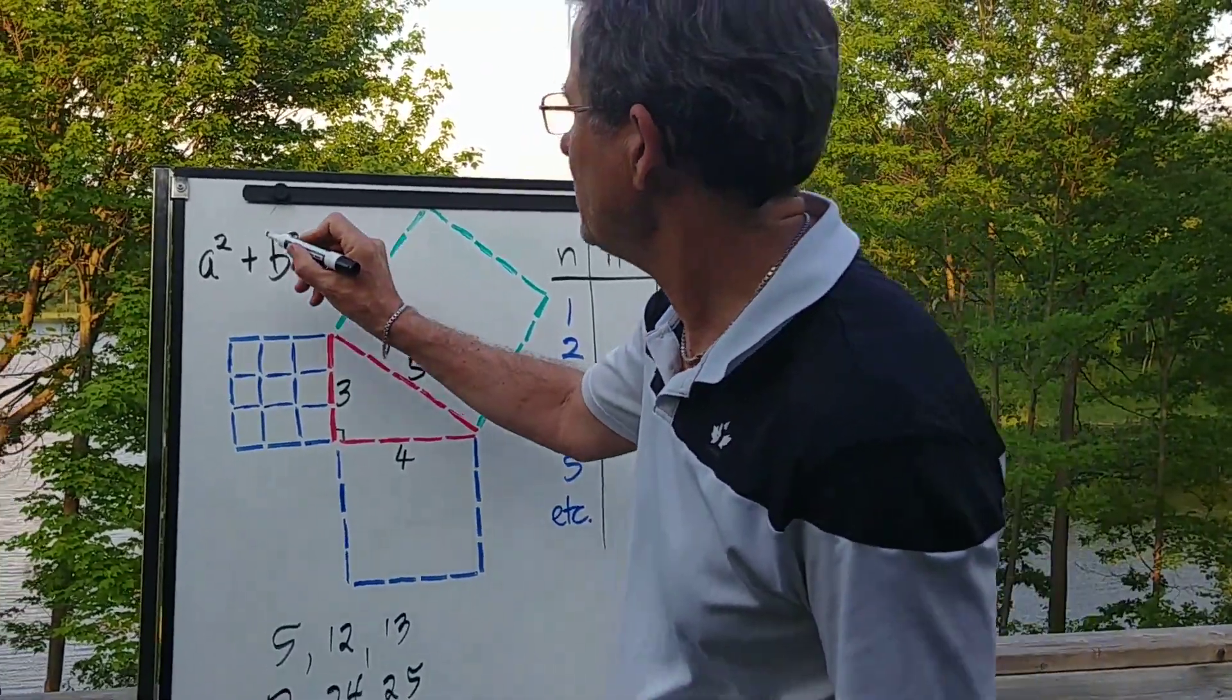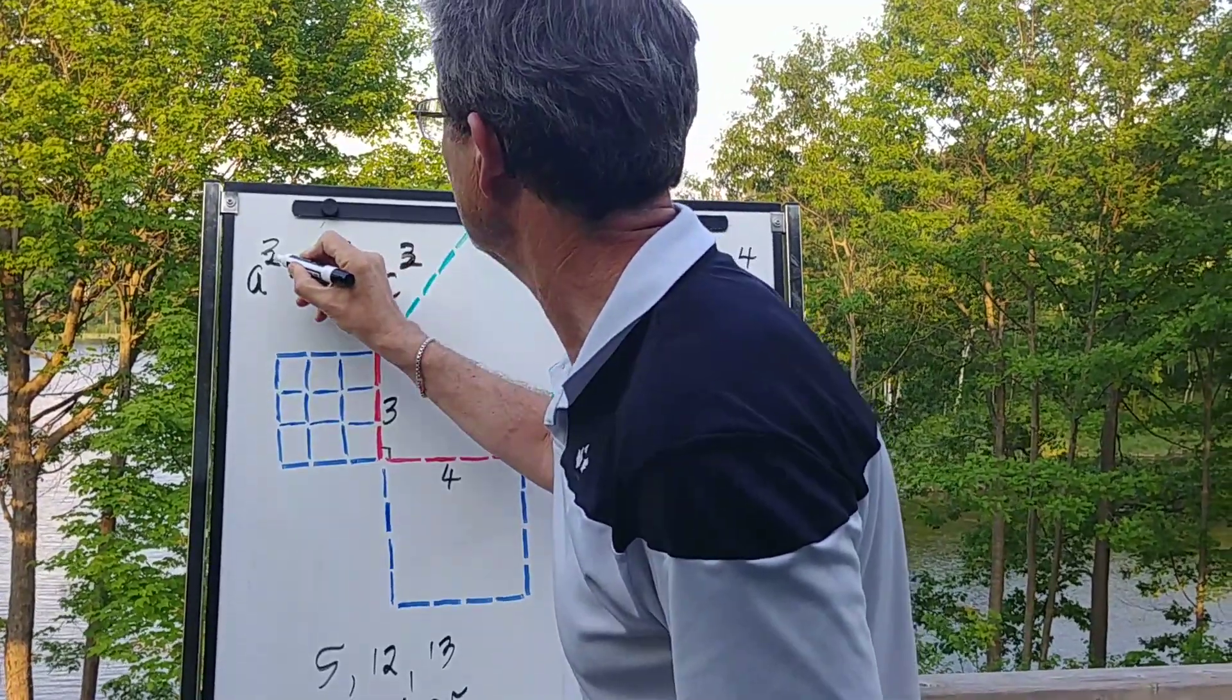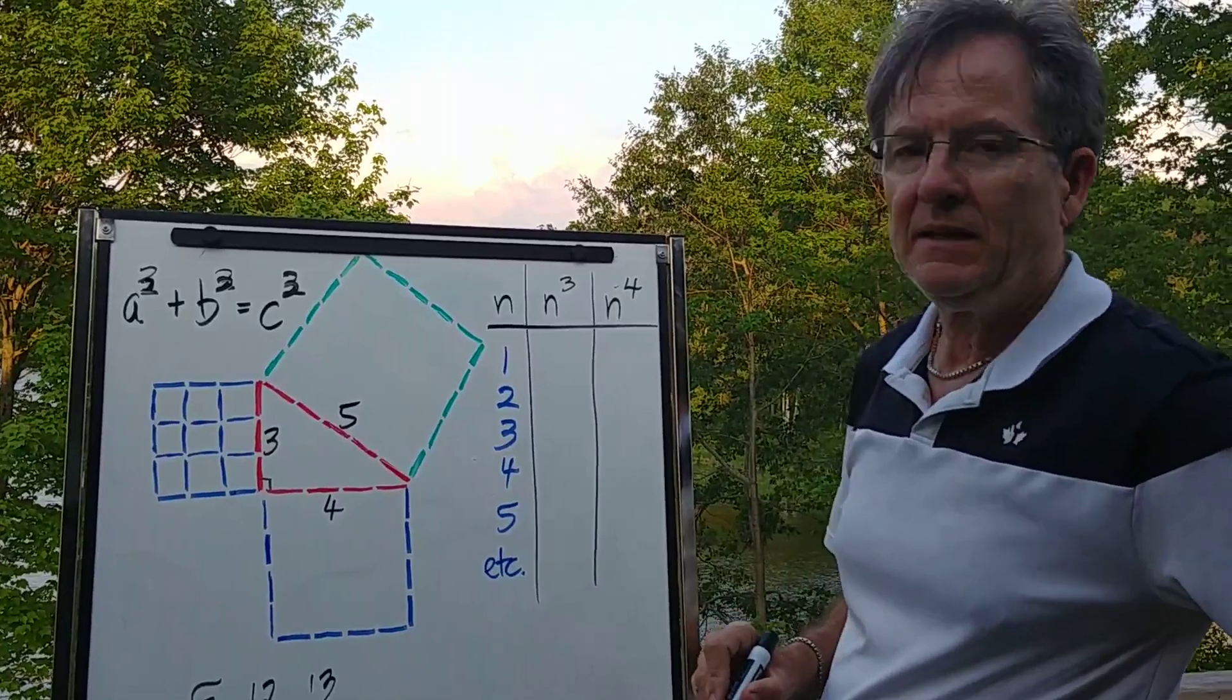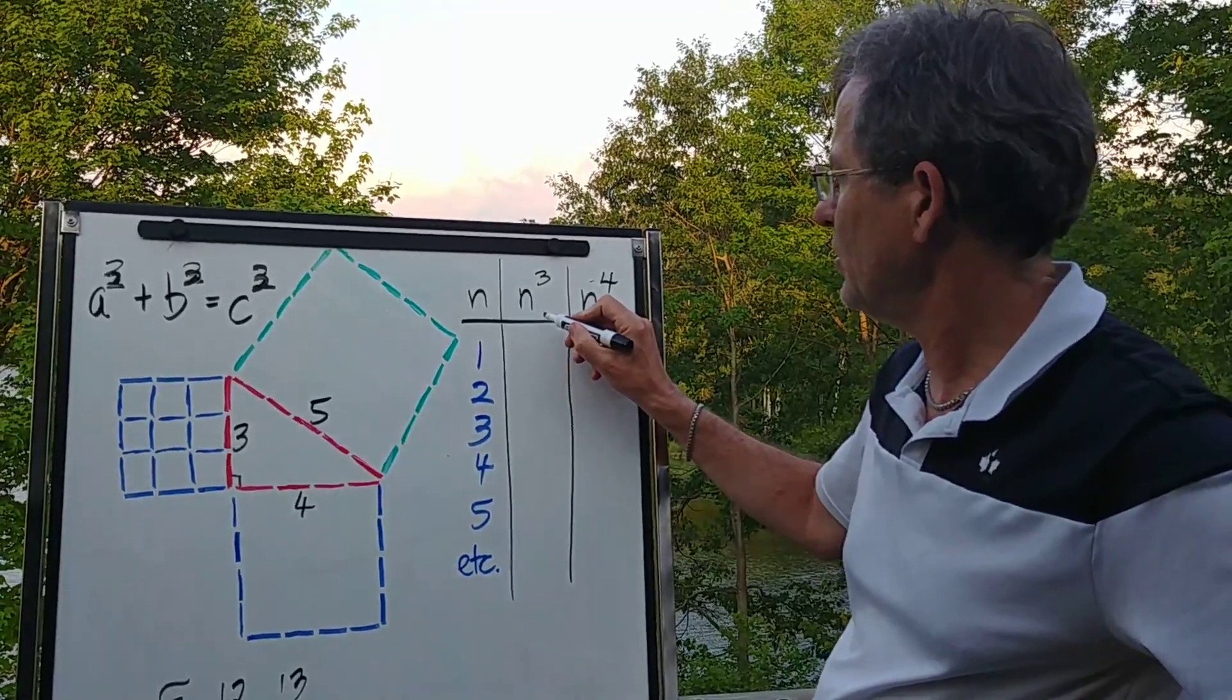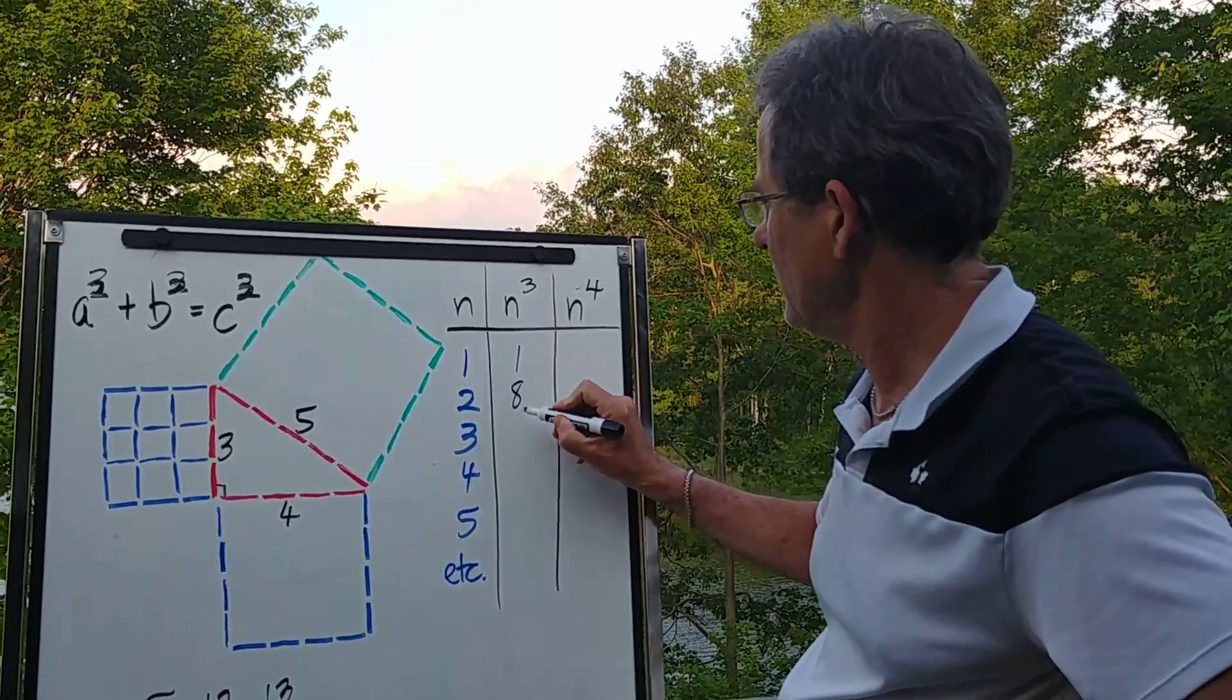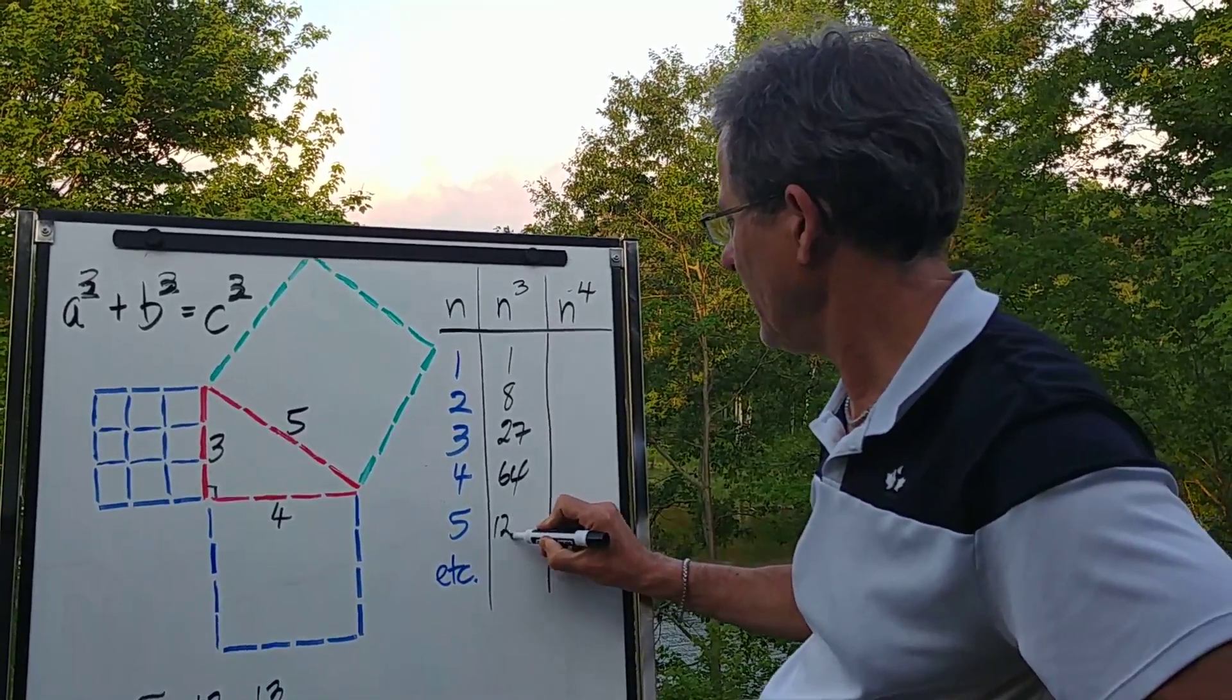But what if we change this to a 3? What if we cube those terms? Then is it possible to get whole numbers that satisfy that? Well, if you want to try it out, just list the cubes of the natural numbers. So 1 cubed, 2 cubed, 3 cubed, 4 cubed, 5 cubed.